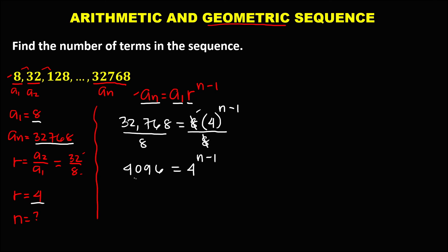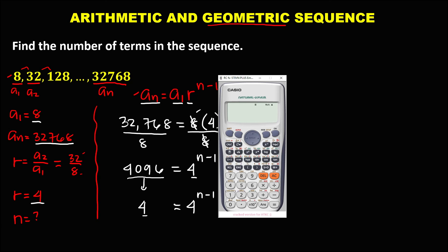To solve for the number of terms, we need to rewrite 4,096 with base 4, because the base on the other side is 4, to the power n minus 1. To find the exponent of 4, we use trial and error with a calculator. If 4 to the power 3 equals 64, and 4 to the power 5 equals 1,024, then 4 to the power 6 equals 4,096. So 4,096 equals 4 to the power 6.